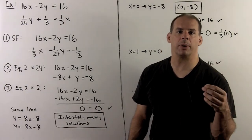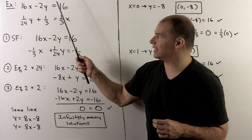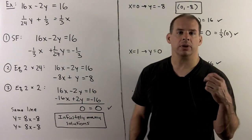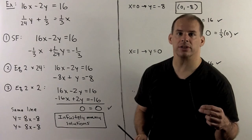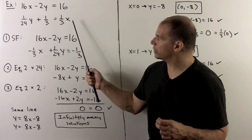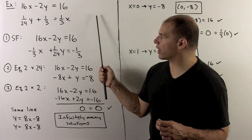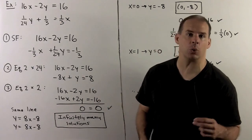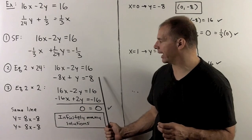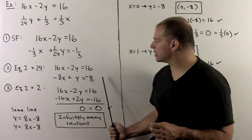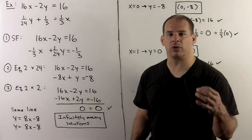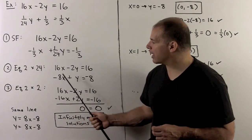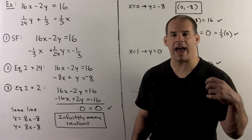For the final example, we check the third possibility: infinitely many solutions. Consider the system: 16x minus 2y equals 16, and one-twenty-fourth y plus one-third equals one-third x. The second equation is not in standard form and has fractions. Push the one-third x to the other side and the one-third constant to the right, then multiply the second equation by 24 to clear denominators, giving minus 8x plus y equals minus 8. Both equations are now in standard form with no fractions.